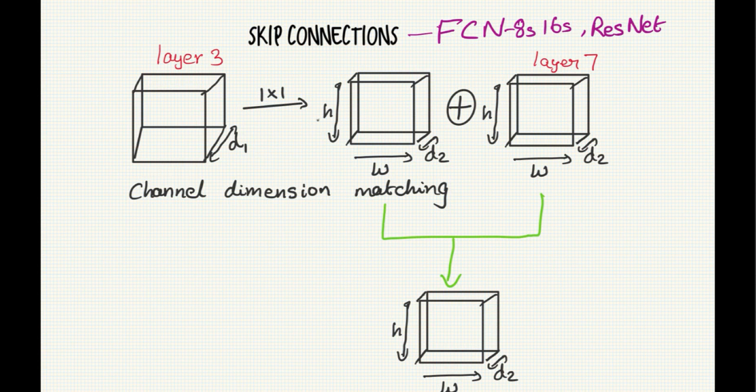So it's not just sufficient to match the height and width. It's also crucial to match the dimensions of the channel. So in order to match the number of channels, our one by one convolution comes to rescue.